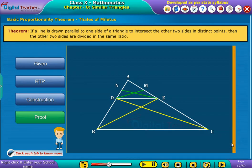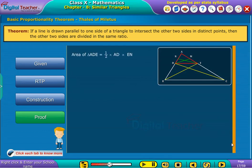Proof. Area of triangle ADE is equal to half into AD into EN. Area of triangle BDE is equal to half into BD into EN.